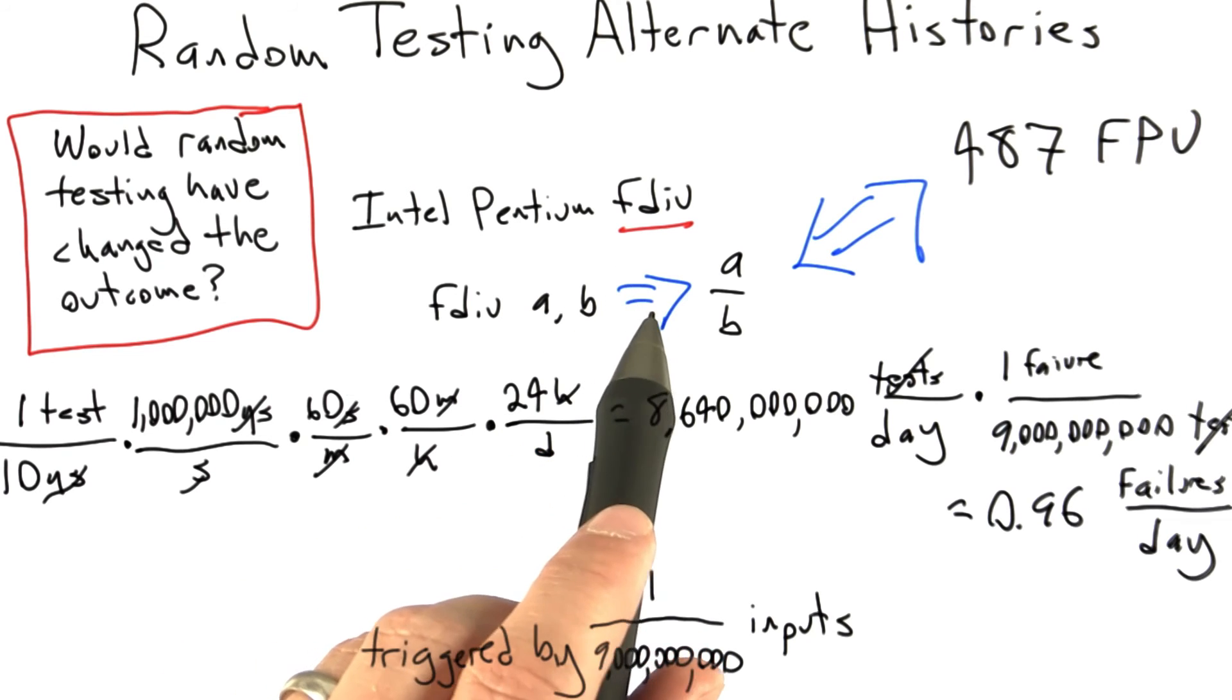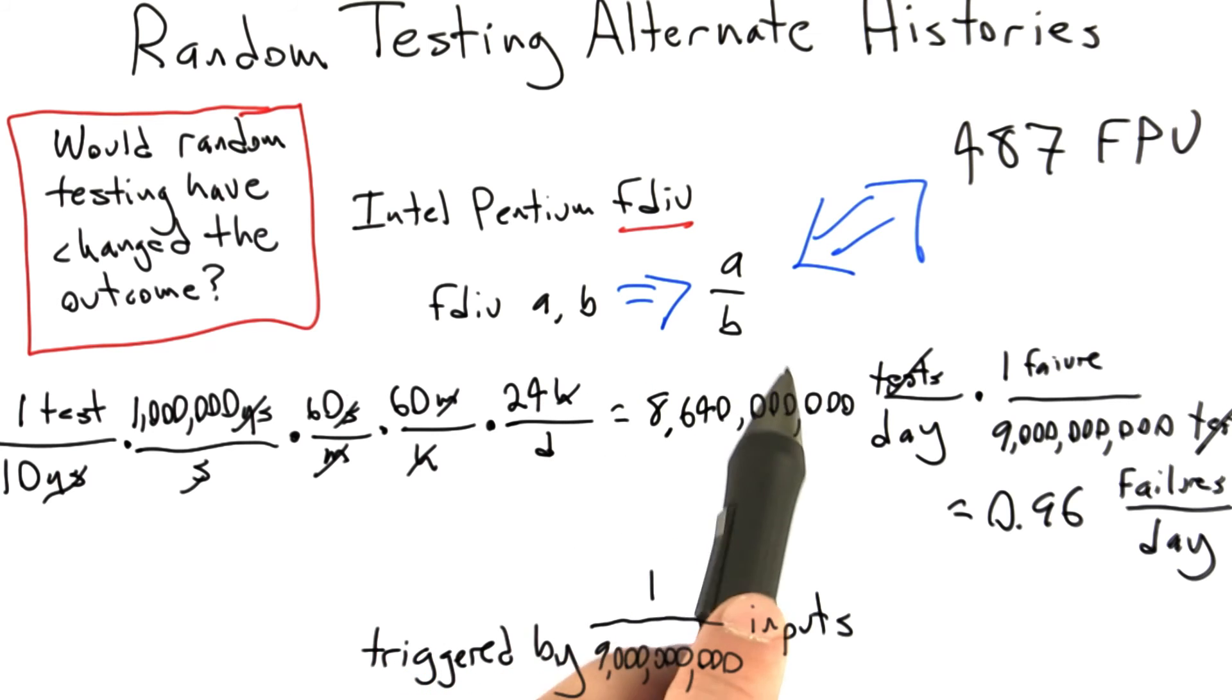So what I think this shows, unless I've messed up egregiously on the math somewhere, is that random testing would have been a perfectly good way to find the Intel Pentium fdiv flaw, presuming, of course, that we could have found a way to rig up a Pentium in concert with a 487, in such a way that they could have cooperated to do the testing.